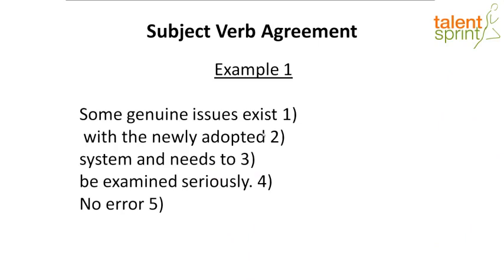Our first example: 'Some genuine issues exist with the newly adopted system and needs to be examined seriously.' The sentence is divided into four parts. Let's understand what the subject is. 'With the newly adopted system' is a prepositional phrase — additional information. 'Some genuine issues exist,' so the subject is 'issues.' 'Genuine' is the adjective describing the issues.